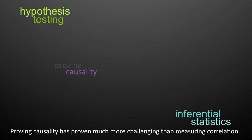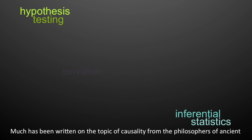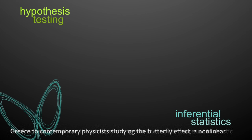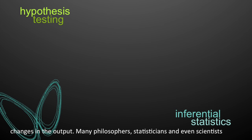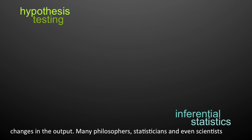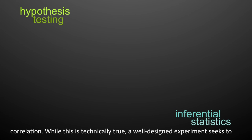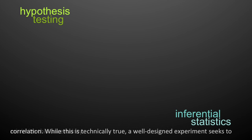Proving causality has proven much more challenging than measuring correlation. Much has been written on the topic from philosophers of ancient Greece to contemporary physicists studying the butterfly effect — a non-linear feedback system where the smallest changes in inputs can result in drastic changes in the output. Many philosophers, statisticians, and even scientists suggest that it's impossible to prove causality of any effect — we can only infer correlation. While this is technically true, a well-designed experiment seeks to minimize this uncertainty.